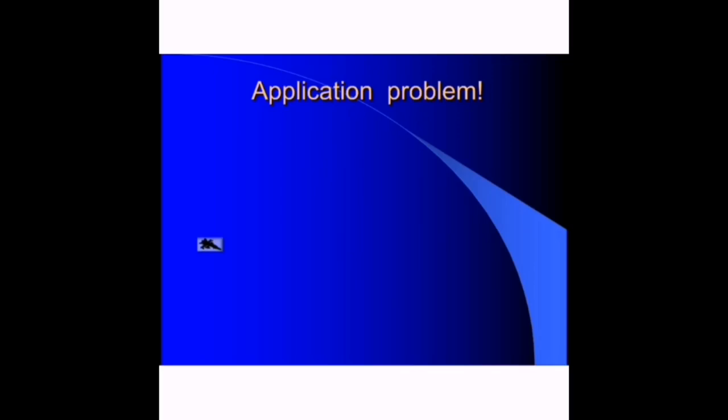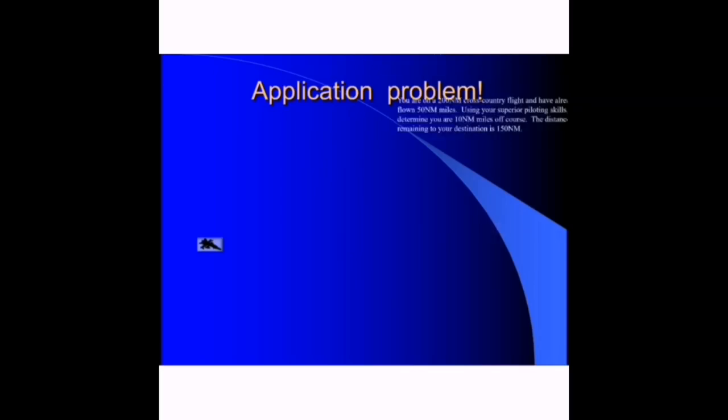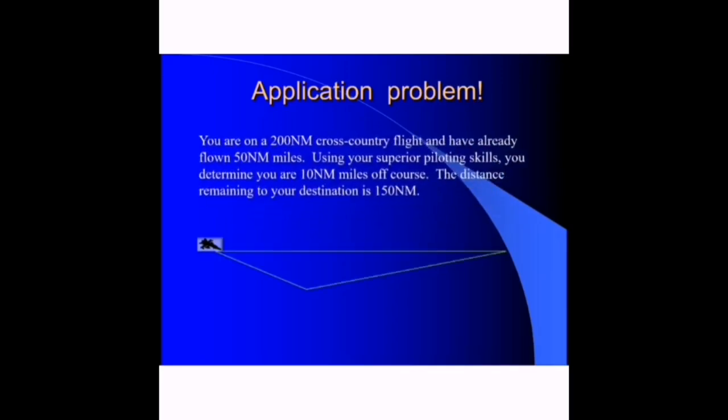In the general application, imagine you are on a 200 nautical mile cross country flight and have already flown 50 nautical miles. Using your superior piloting skills, you determine you are 10 nautical miles off course, deviated from your original track. The distance remaining to your destination is 150 nautical miles.